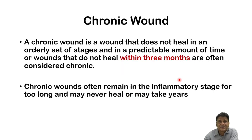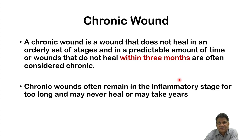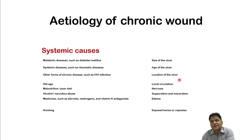A chronic wound is defined as one that does not heal in an ordinary set of stages and in a predictable amount of time. Wounds that do not heal within three months are often considered chronic wounds. Chronic wounds often remain in the inflammatory stage for too long and may never heal or may take years. There are many etiologies.